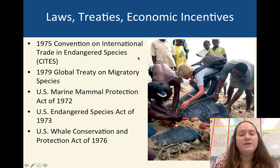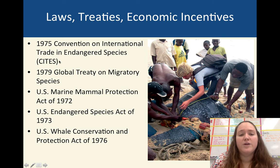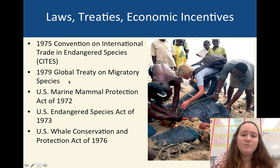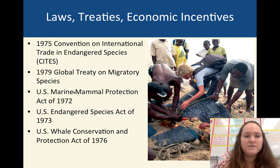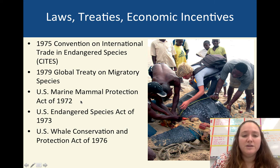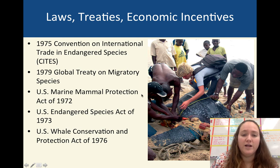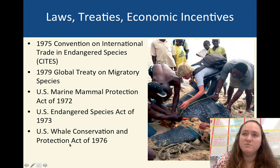What can we do? We can enact laws, treaties, and economic incentives. We already know about CITES for making international trade of endangered species illegal. There's a global treaty on migratory species — dolphins, whales, and sharks — so we don't fish in areas where they migrate. Protecting mammal species like dolphins is illegal to catch. The Endangered Species Act also helps if we put a species on that list, like the sea turtle caught in the net. Whale conservation has been relatively successful from our whaling practices.